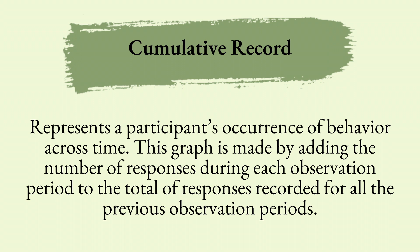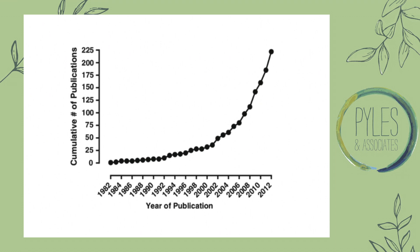Up next is a cumulative record, created by B.F. Skinner himself. The cumulative record represents a participant's occurrence across time. This graph is made by adding the number of responses during each observation period, and then the total responses are recorded for all previous observation periods — so this is going to be a longer-looking graph. The y-axis represents the total number of responses since the start of data collection, and the x-axis represents the time passed since the start of data collection. You want to use a cumulative record when you want to show a rate of progress for an individual working towards a new goal or skill — not for a skill this person has already met.